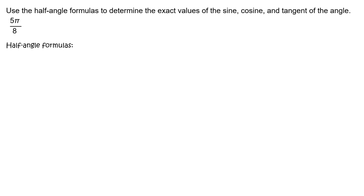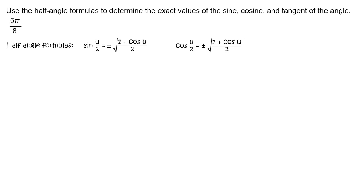Recall the half-angle formulas. Sine of u/2 equals plus or minus the square root of the quantity (1 minus cosine u) divided by 2. Cosine of u/2 equals plus or minus the square root of the quantity (1 plus cosine u) divided by 2. Tangent of u/2 equals the quantity (1 minus cosine u) divided by sine of u.